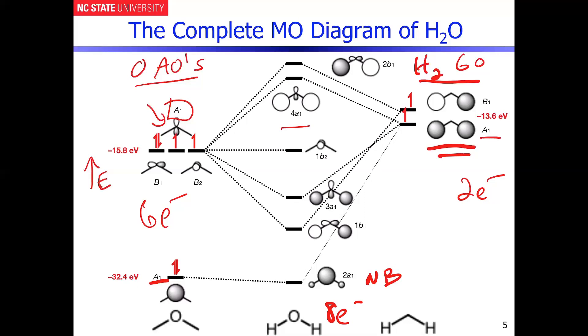And then, of course, as I said before, I forgot to include the non-bonding B2 orbital, which has no symmetry match. So now, if we want to include all of the electrons, what we're going to do is we put them all in, obeying the Aufbau principle.